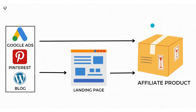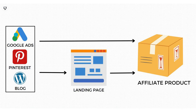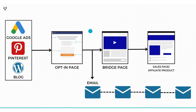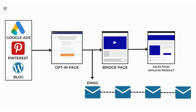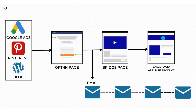In both cases, we see that this is not the right method to promote affiliate products. Now let's talk about the right method. You can see this blueprint, which is the method that top affiliates prefer. In this method, the first thing we have is the traffic source. The second is the opt-in page. The third is the bridge page. And lastly, the sales page or the product page.